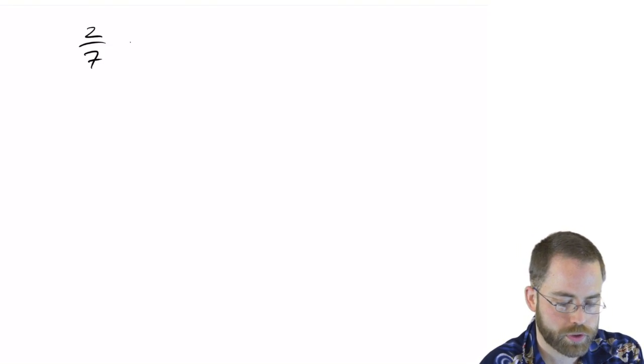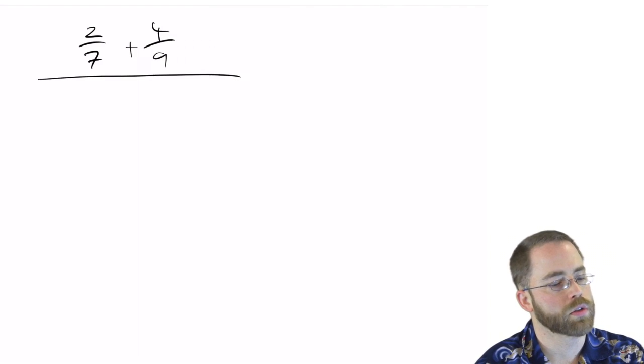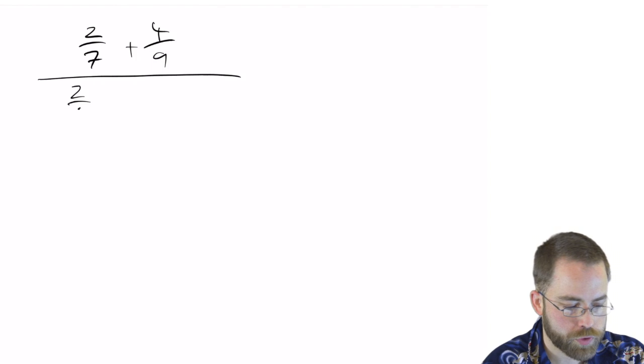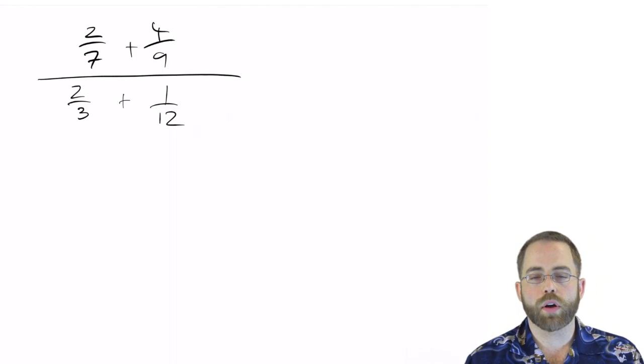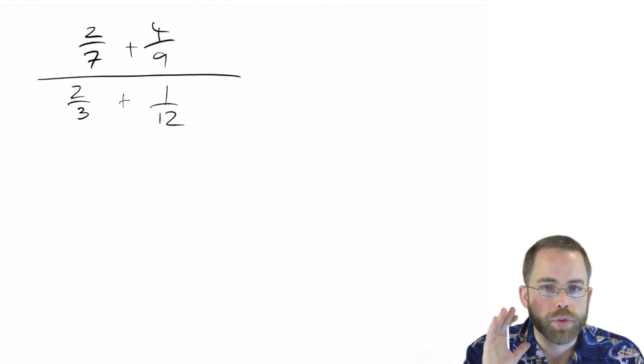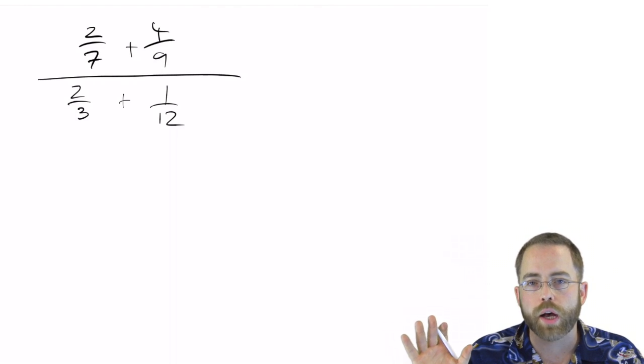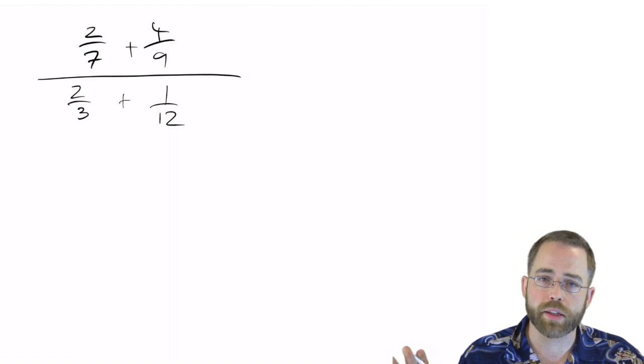let's talk about something rather complicated, specifically called a complex fraction. So for example, 2 over 7 plus 4 over 9, all over 2 over 3 plus 1 over 12. Now, I laid it out here to be very clear, with northwest, northeast, southwest, southeast kind of quadrants to break it all up.